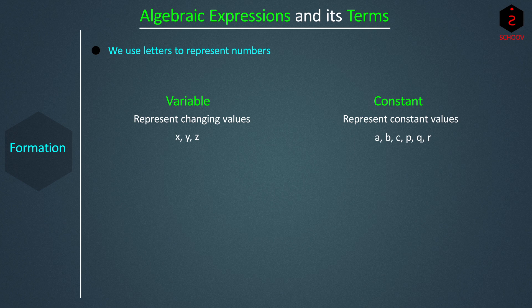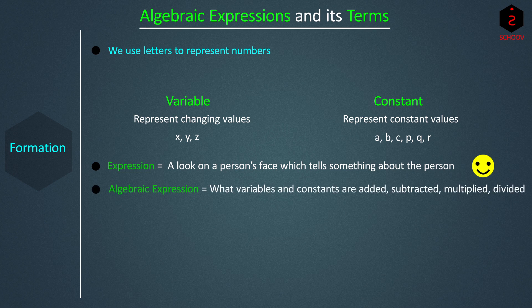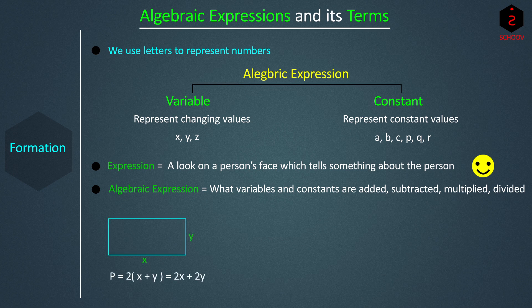Now, what is an algebraic expression? In English, an expression means a look on a person's face which tells something about the person — for example, a smiling expression means the person is happy. The meaning of algebraic expression is the same. An algebraic expression tells something about the variables and constants involved — it tells what variables and constants are added, subtracted, multiplied, or divided. An algebraic expression is a collection of variables, constants, and numbers. So, the perimeter of a rectangle of length X and breadth Y is 2(X + Y), that is 2X + 2Y. This is an algebraic expression.